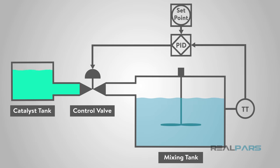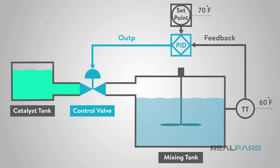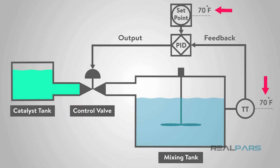In automation programming, we are often required to program a control loop for a given process to control temperature, pressure, flow rate, etc. This requires a target setpoint with a controlled feedback process variable. A PID process loop controller is designed to generate an output that causes some corrective effort to be applied to a process so as to drive a measurable process variable towards the desired setpoint value.